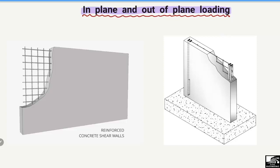So the in-plane loading is the type of loading on any structural member where the load acts along the plane of the member. For out-of-plane loading, the name shows that this load is acting out of the plane of the member — such type of loading is called out-of-plane loading.